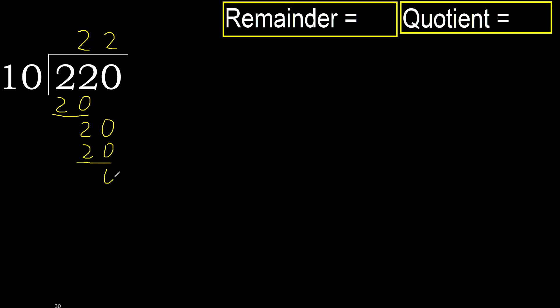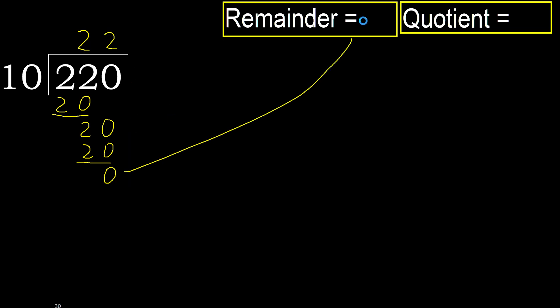Subtract. Next — that is not a number, therefore finish it. Okay, 220 divided by 10 is 22.